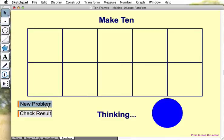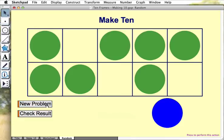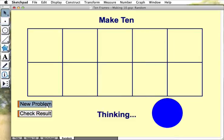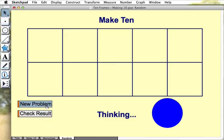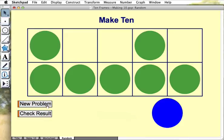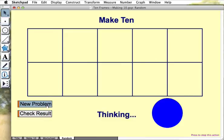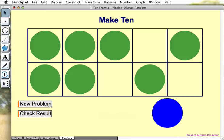By pressing New Problem, we can generate new random patterns of green counters, and students work as quickly as they can to identify how many green counters there are and how many blue counters need to be added to make 10.